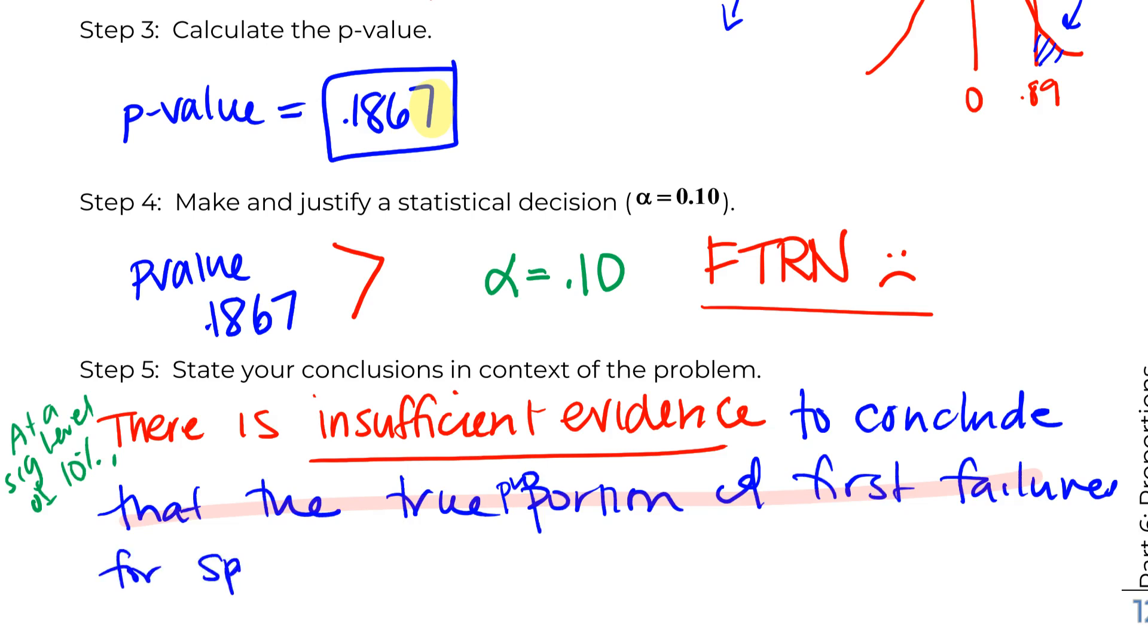So the true proportion of first failures for sports cars is—and then here's where you have some stylistic choice. You can either say is higher than all passenger cars and match the wording of the question, or I always look and see which one's going to be less writing. So I'm going to say is more than 0.3. Same thing, but you could also write higher than for all passenger cars. Either would work.